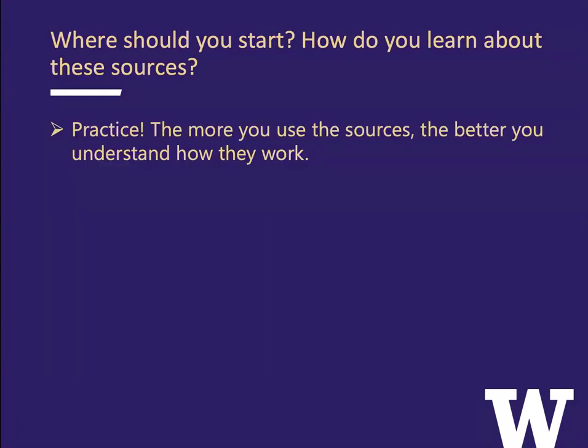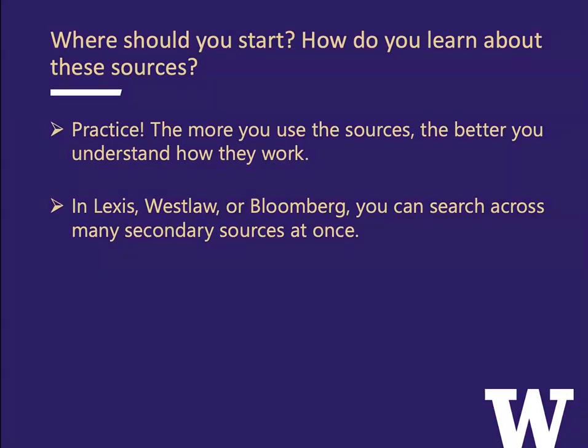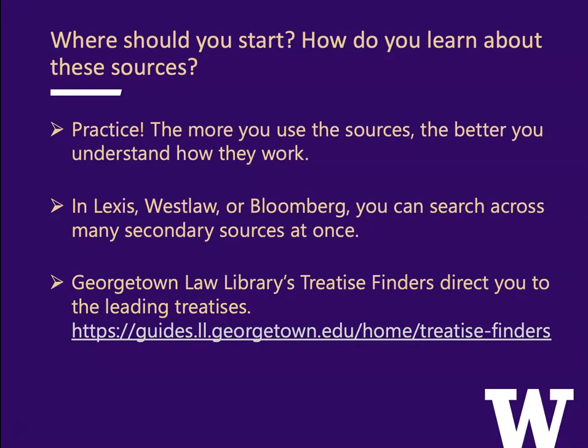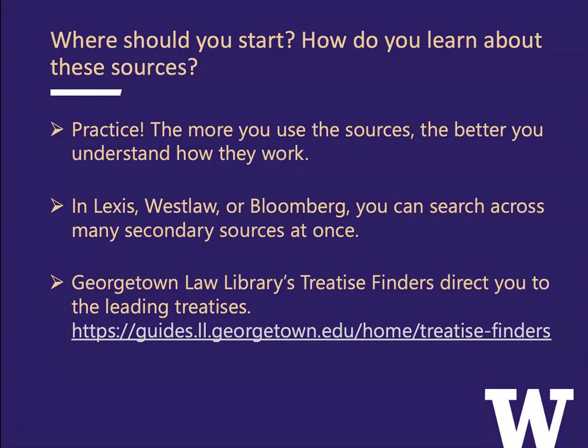Where should you start, and how do you learn about these sources? Practice — the more you use the sources, the better you understand how they work. In Lexis, Westlaw, or Bloomberg, you can search across many secondary sources at once, see what you get, and then pay attention: 'I found something helpful in an encyclopedia,' 'I found something helpful in this treatise,' 'this is what an ALR annotation does.' Georgetown Law Library has a terrific set of web pages called Treatise Finders that direct you to the leading treatises for different areas of law.